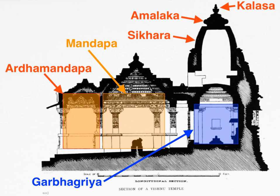The four cardinal directions help create the axis of a Hindu temple, around which is formed a perfect square in the space available. The circle of Mandala circumscribes the square. The square is considered divine for its perfection and is a symbolic product of knowledge and human thought, while the circle is considered earthly, human and observed in everyday life. Each supports the other. The square is divided into perfect square grids. In large temples, this is often an 8x8 or 64 grid structure. In ceremonial temple superstructures, this is an 81 sub-square grid.